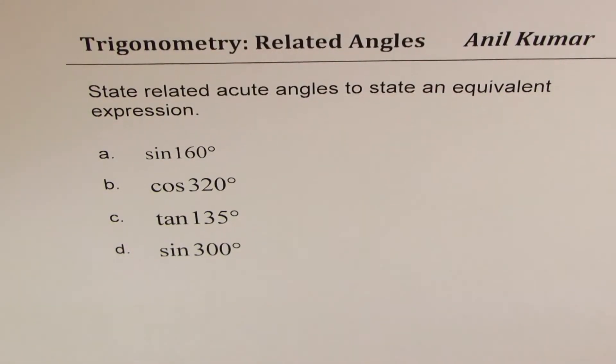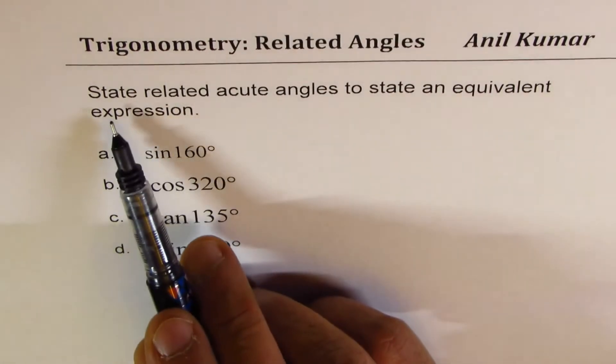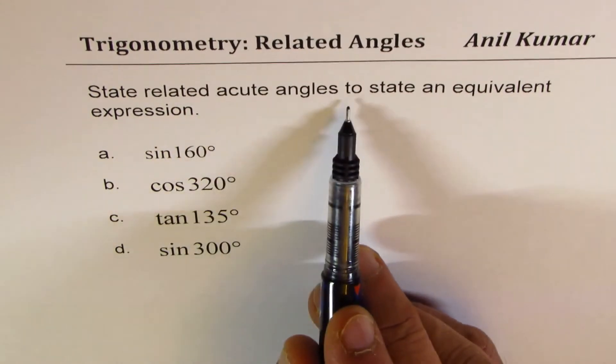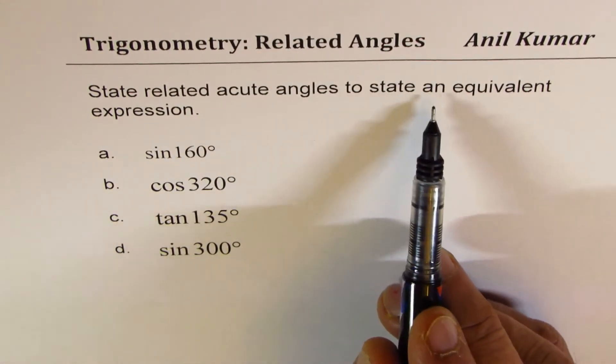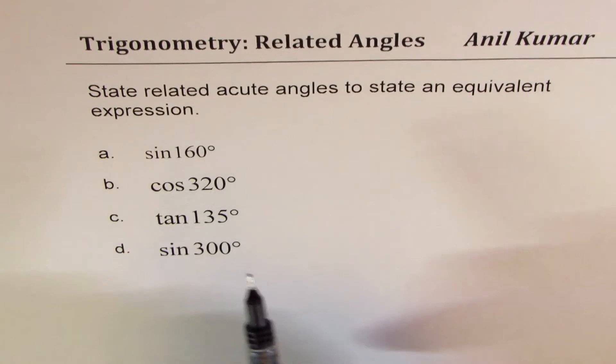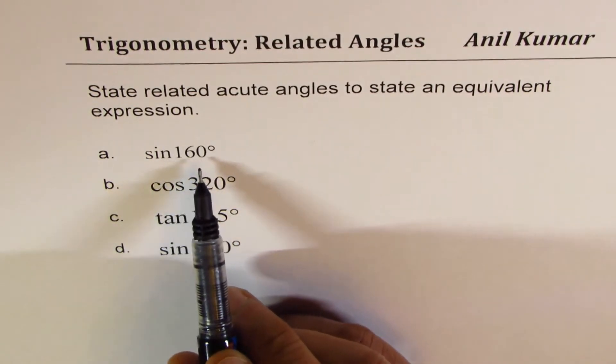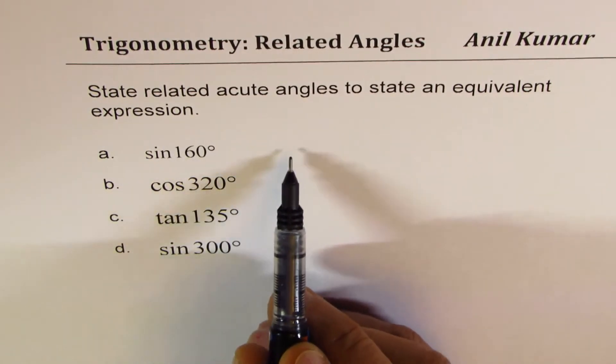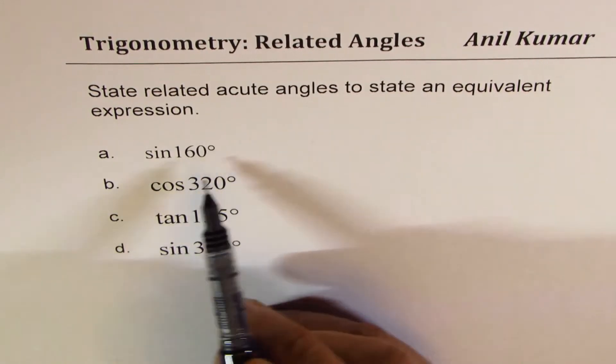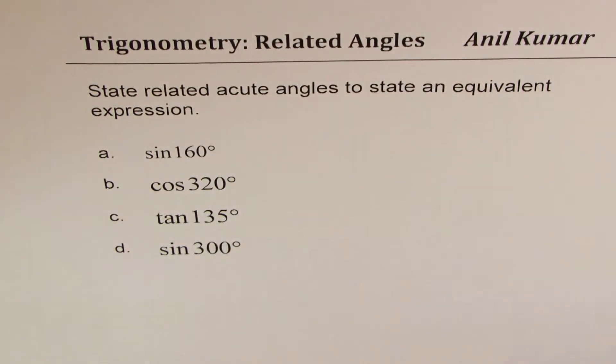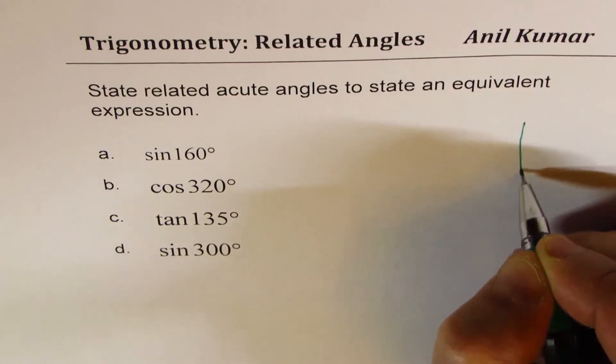I'm Anil Kumar and in this video we'll link the trigonometric ratios with their related acute angles. The question here is state related acute angles to state an equivalent expression. So that is to say sin 160° could be equal to sine of what? That is what the meaning is. Let us see how to figure it out.